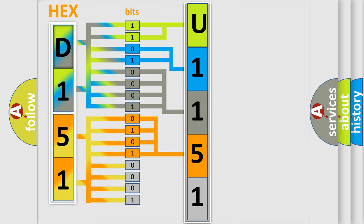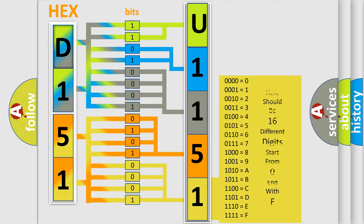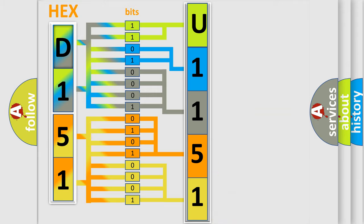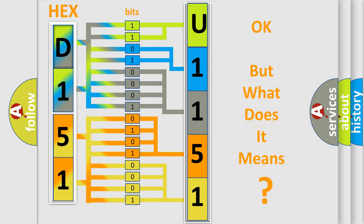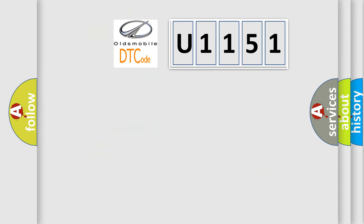A single byte conceals 256 possible combinations. We now know in what way the diagnostic tool translates the received information into a more comprehensible format. The number itself does not make sense to us if we cannot assign information about what it actually expresses. So, what does the diagnostic trouble code U1151 interpret specifically for Oldsmobile car manufacturers?